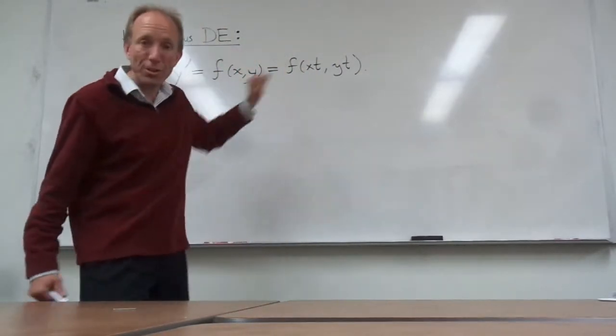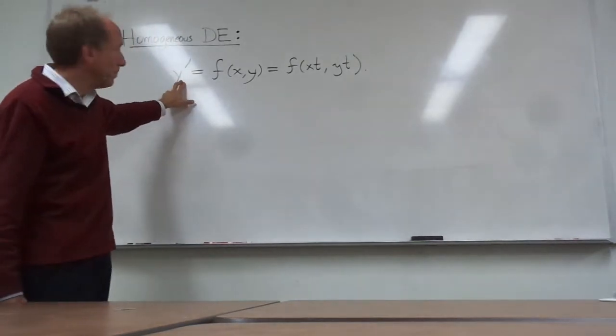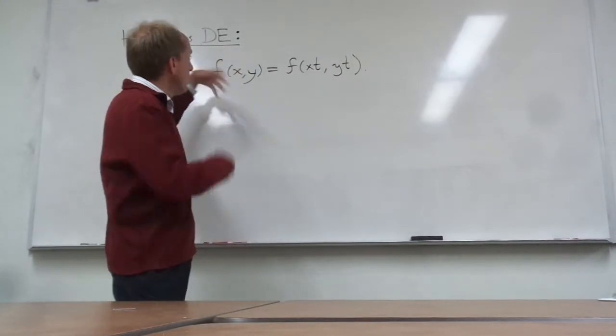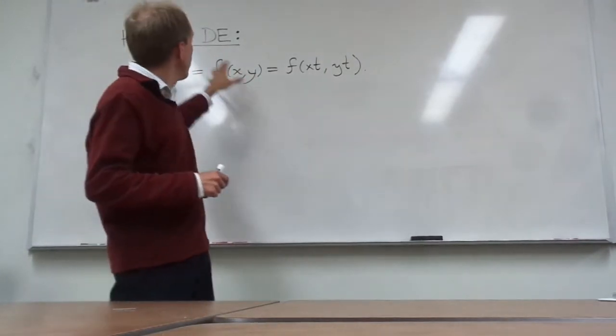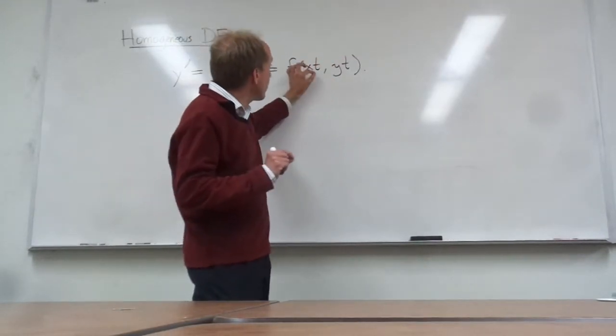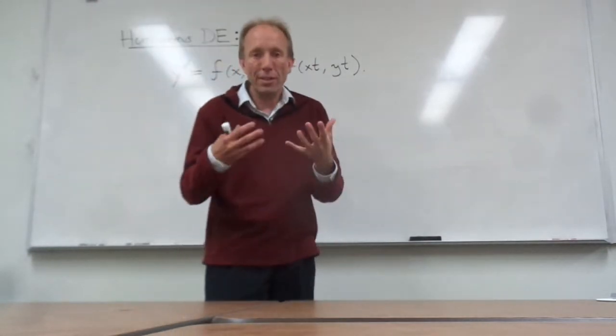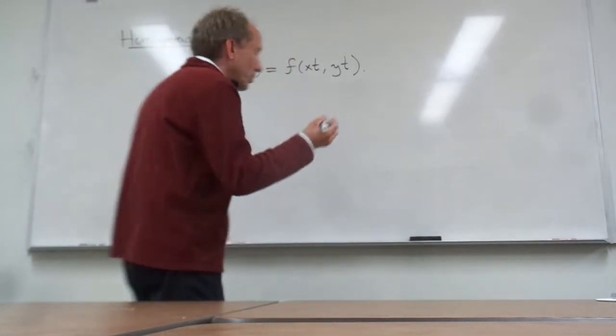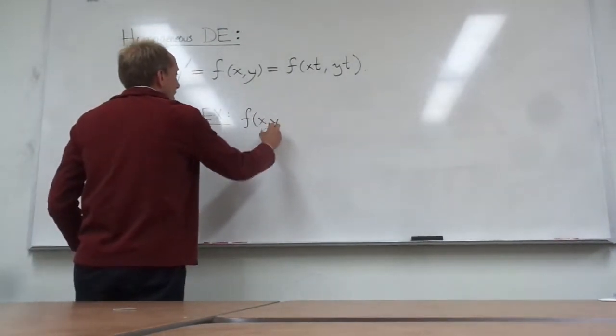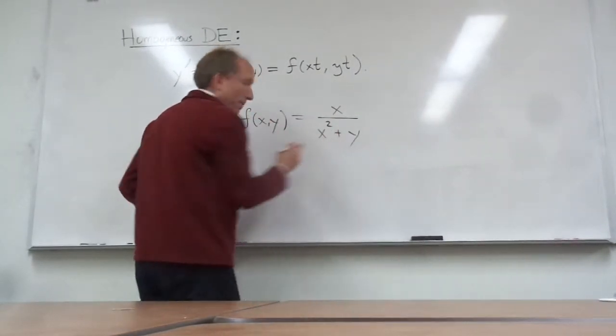So homogeneous differential equations always can be written like this. The derivative of y is some function of the variable x and the function y. So we don't know what it is, but we do know for a homogeneous differential equation, if we attach a t next to every single x and next to every single y, all of those t's should cancel back out again. So just really quickly, here's an example. Let's suppose that my function f of x and y was x over x squared plus y.